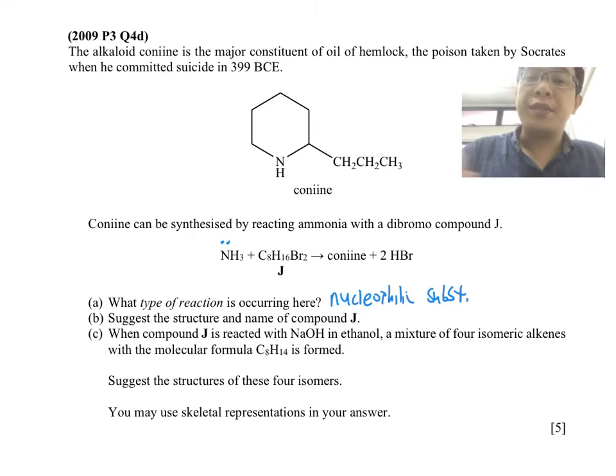All right, so this is how the reaction goes. So let's take a look. Number B: Suggest a structure and name of the compound J. So right now you have this plus this. Okay, so which means that I need to reverse engineer my compound here to deduce what's my compound J.